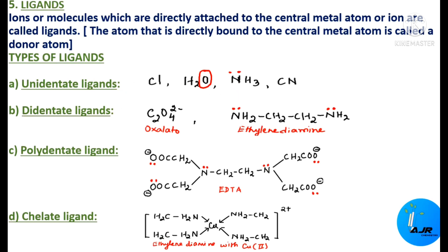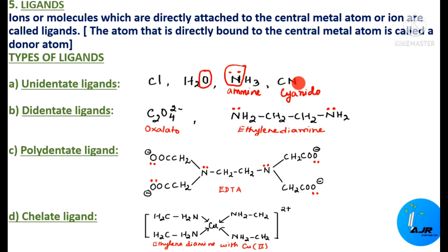Ammonia (NH₃) is a unidentate ligand where nitrogen is the donor atom, donating electrons to the central metal atom. Cyanido (CN⁻) is also a unidentate ligand — in some compounds carbon donates electrons, in other compounds nitrogen donates electrons, but only one atom donates at a time.